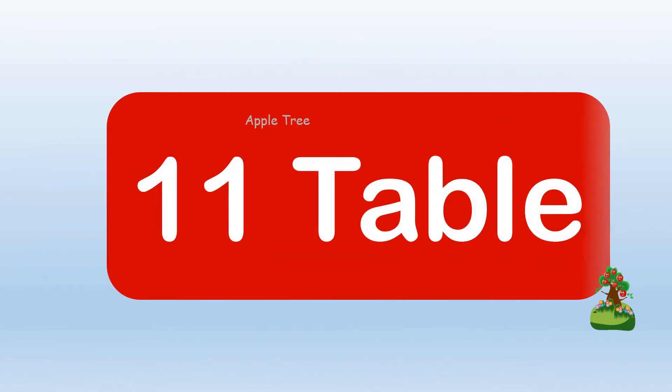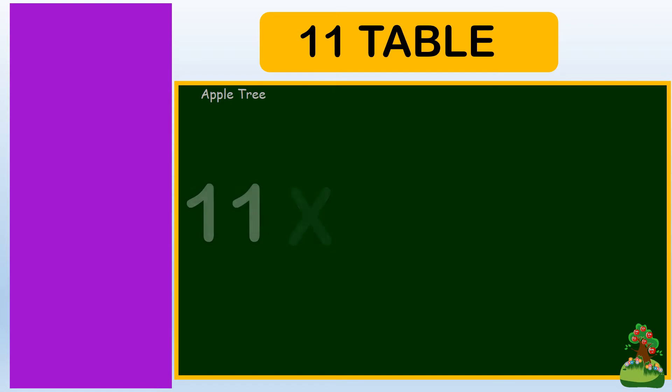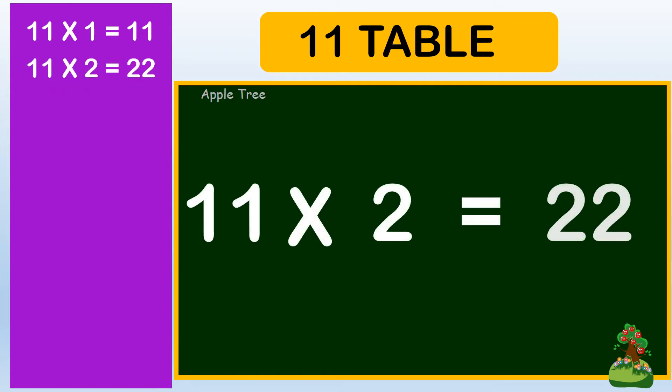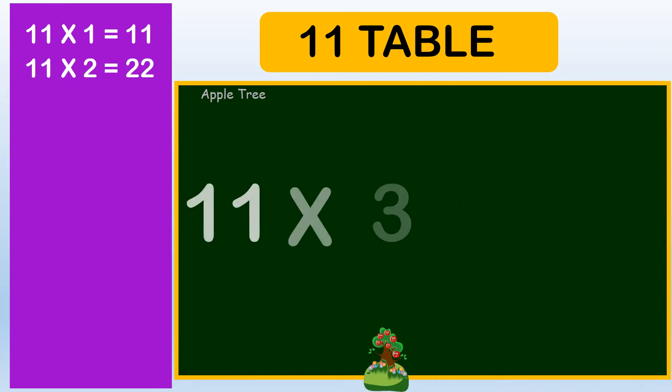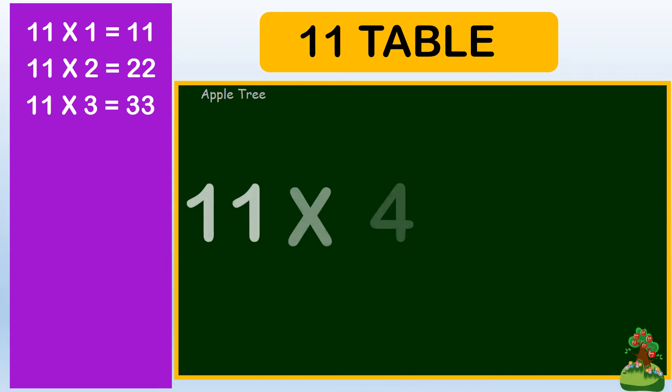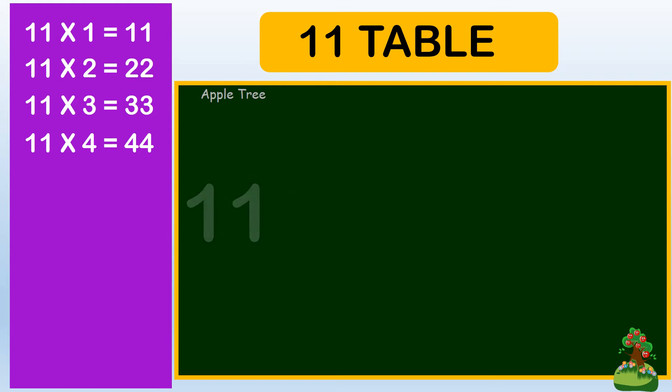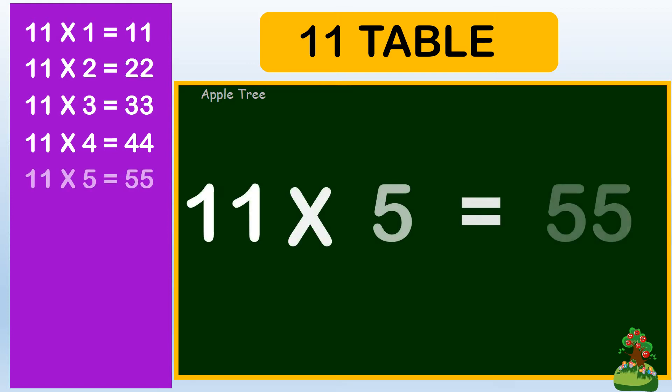Table for 11. 11 ones are 11, 11 twos are 22, 11 threes are 33, 11 fours are 44, 11 fives are 55,